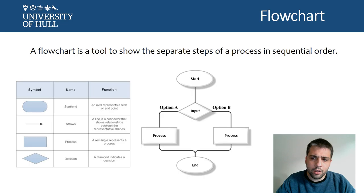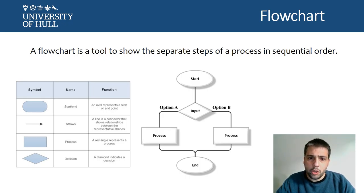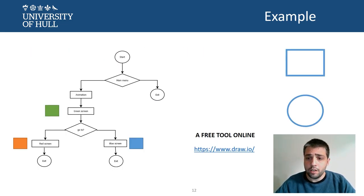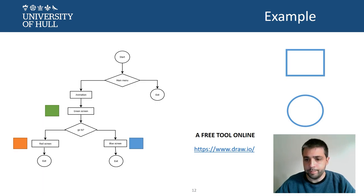We usually design diagrams or flowcharts in order to visualize the different steps. In the tradition of computing and science, we use rounded forms to denote processes, square ones for other kinds of processes, and diamonds when we have to take a decision or there is more than one option in that state. For the exercise this week and for your own projects, you can use this free tool online — it's very complete and useful — but you can also do these diagrams using PowerPoint.